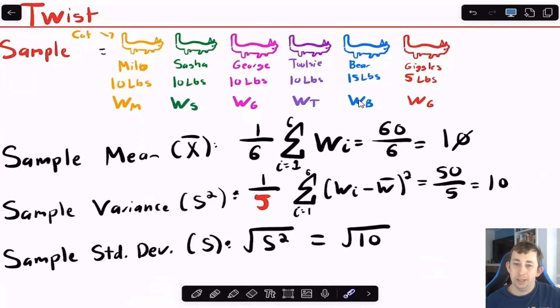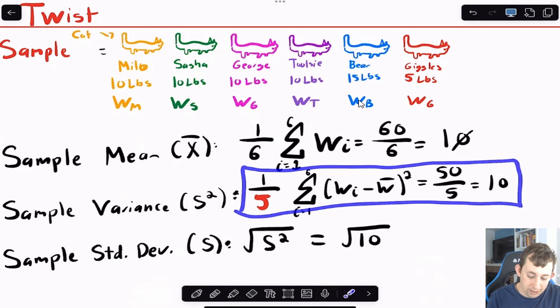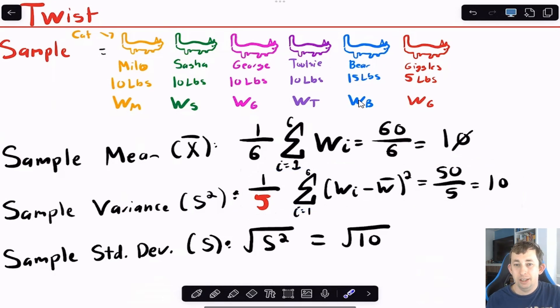Now what I just did is assuming that that was a population of cats, but maybe more realistically, there's probably more than those six cats that live on my block or in my neighborhood, so maybe this is just the sample of cats that I have, and I'm trying to use that sample to approximate what I think the population mean is going to be. So what I can do here is now my sample mean is going to be exactly the same as it was before. For my variance, because I don't have the overall population, because I just have this sample, rather than divide it by 1 over n, I'm going to divide it by 1 over n minus 1, and 6 minus 1 is 5, which is why you see the 5 right here. The standard deviation is going to stay exactly the same, and that's just going to be the square root of the variance, which in this case is the square root of 10.